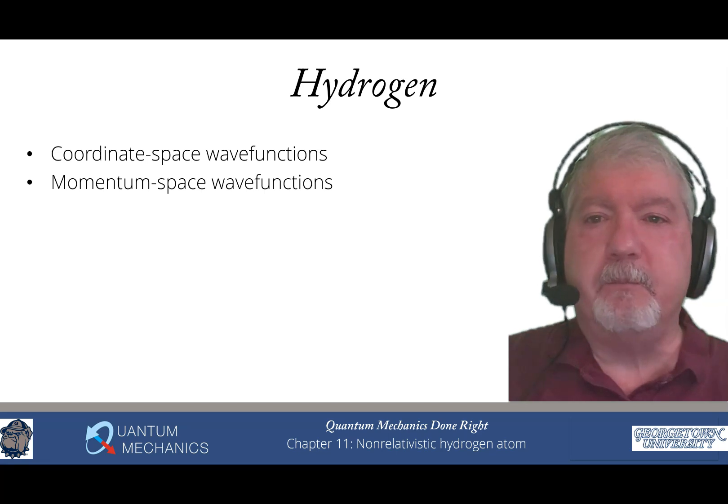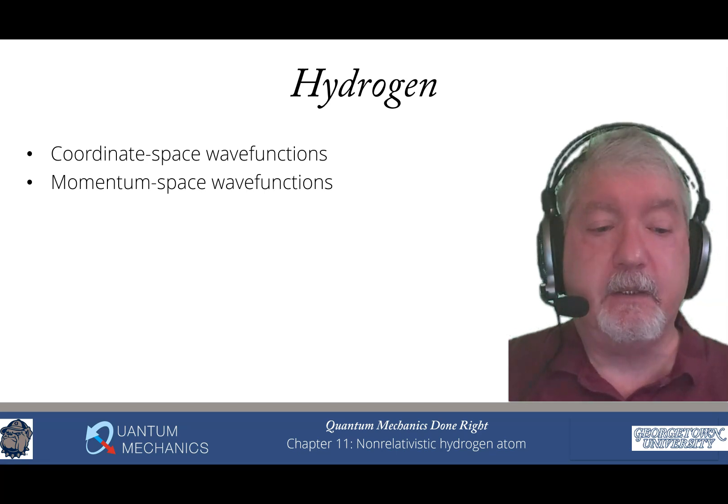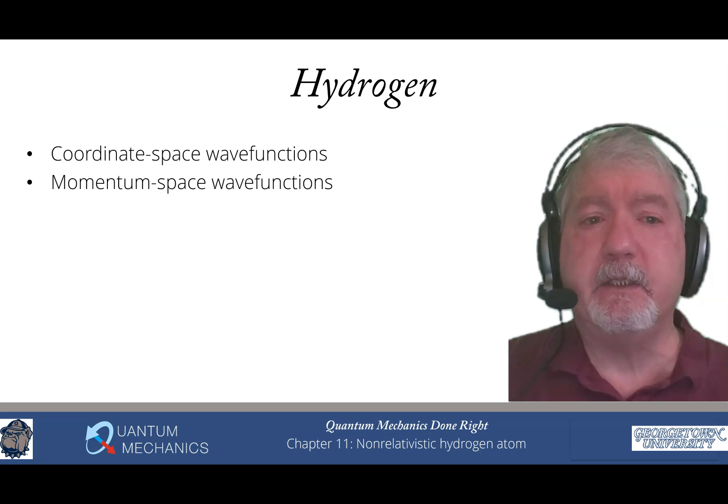To get the momentum space wave functions, we use a different factorization—it's a Cartesian factorization. We resolve hydrogen not using angular momentum this time. This is a really interesting way of solving the problem and allows us to directly get the wave functions in momentum space.